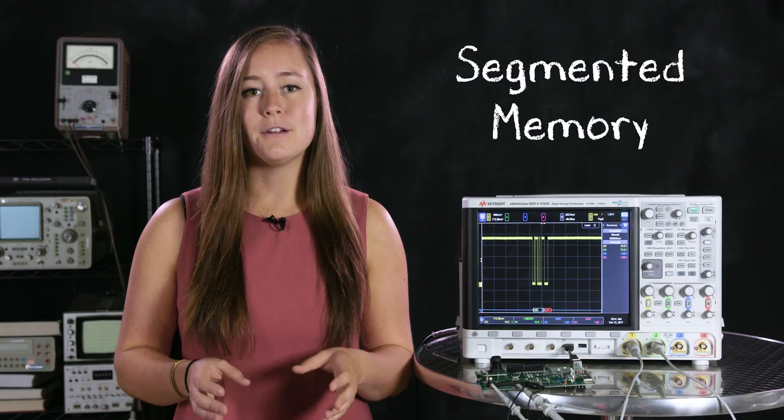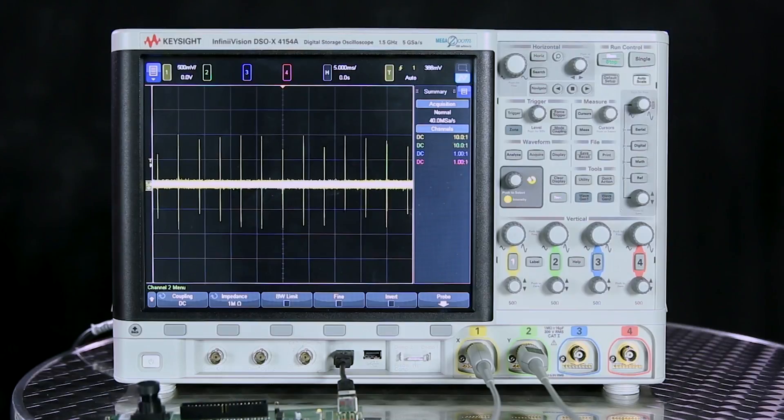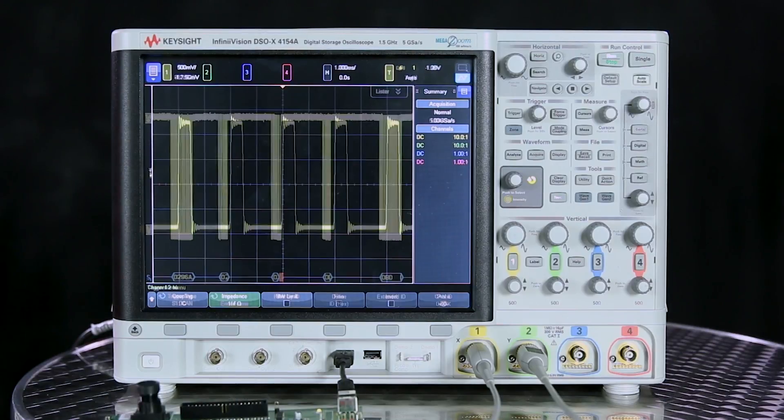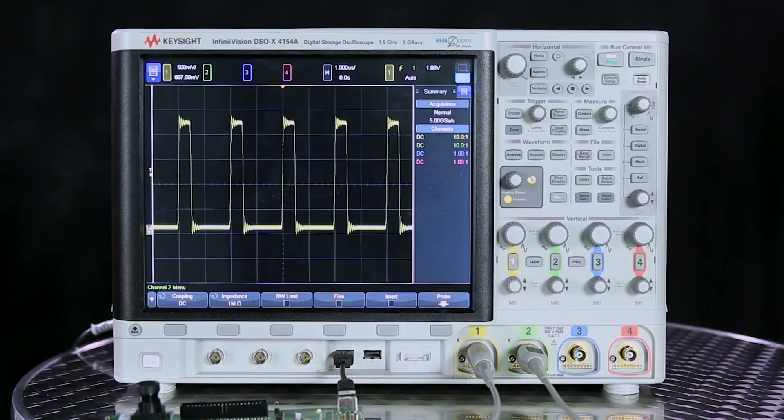Segmented memory is especially useful when you're looking at a signal that has events that are spaced out and you don't necessarily care about the time between each of those events. So it's a really useful tool for things like measuring RF bursts, decoding serial buses, and really finding glitches in anything that is repetitive.